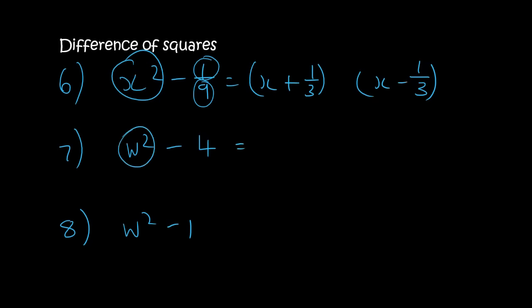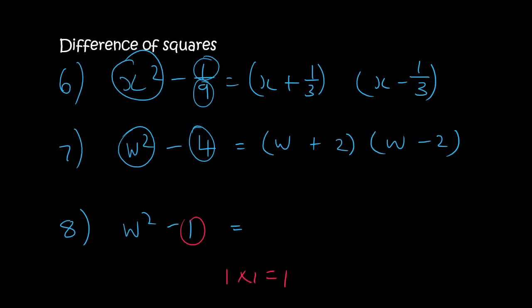For w squared minus 4: w times w is w squared and 2 times 2 is 4, so open two brackets: w, w, 2, 2 — one gets a plus and one gets a minus. People often panic when they see the number 1, but remember that 1 times 1 is 1. So w squared minus 1 just becomes two brackets: w, w, 1, 1, one plus and one minus. Thank you for watching.